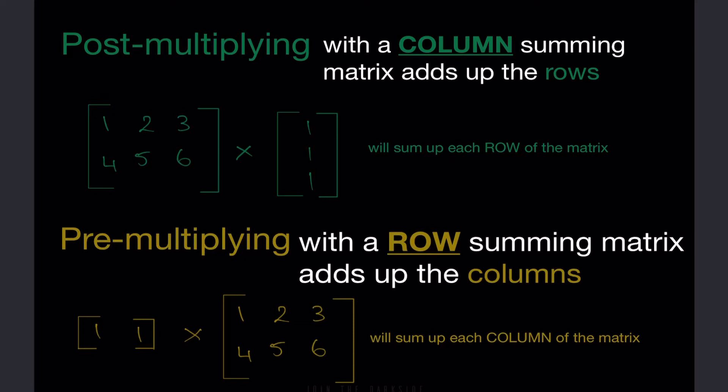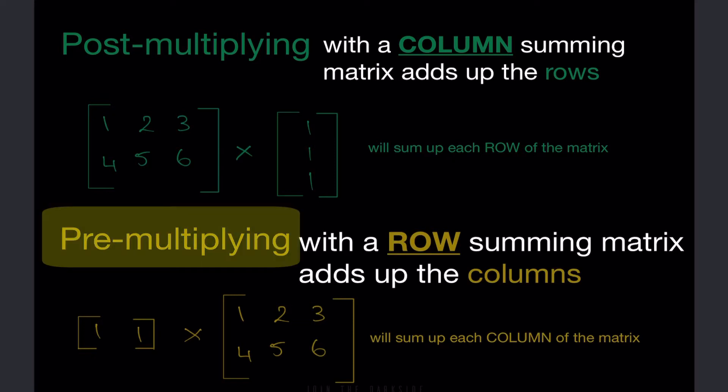We can also pre-multiply with a row summing matrix to add up the columns. Pre-multiplying means that the summing matrix is at the start of our calculation.